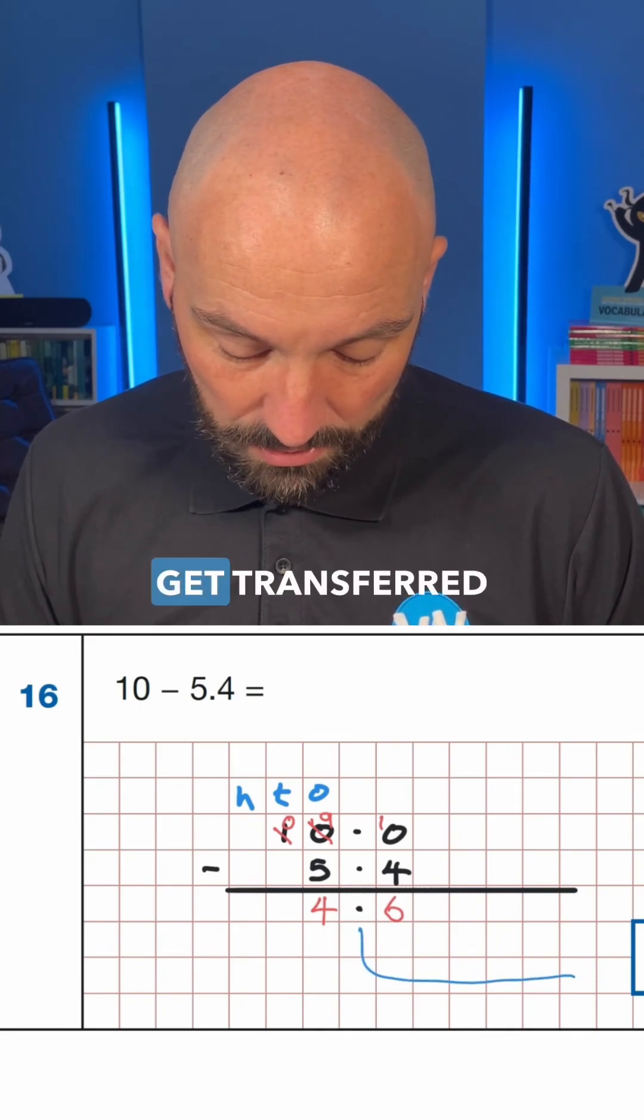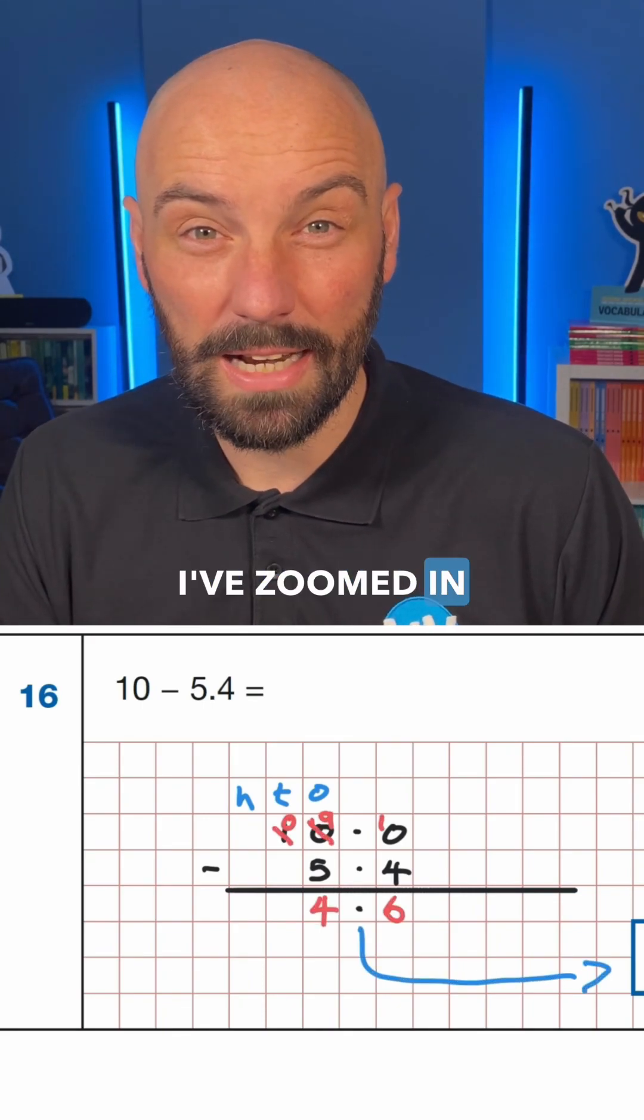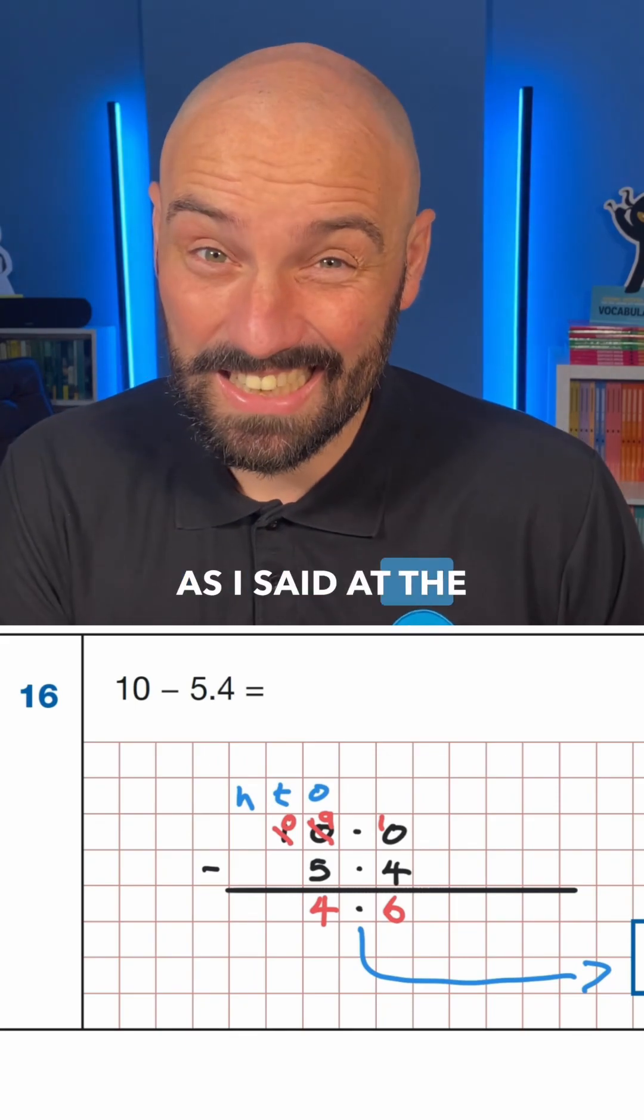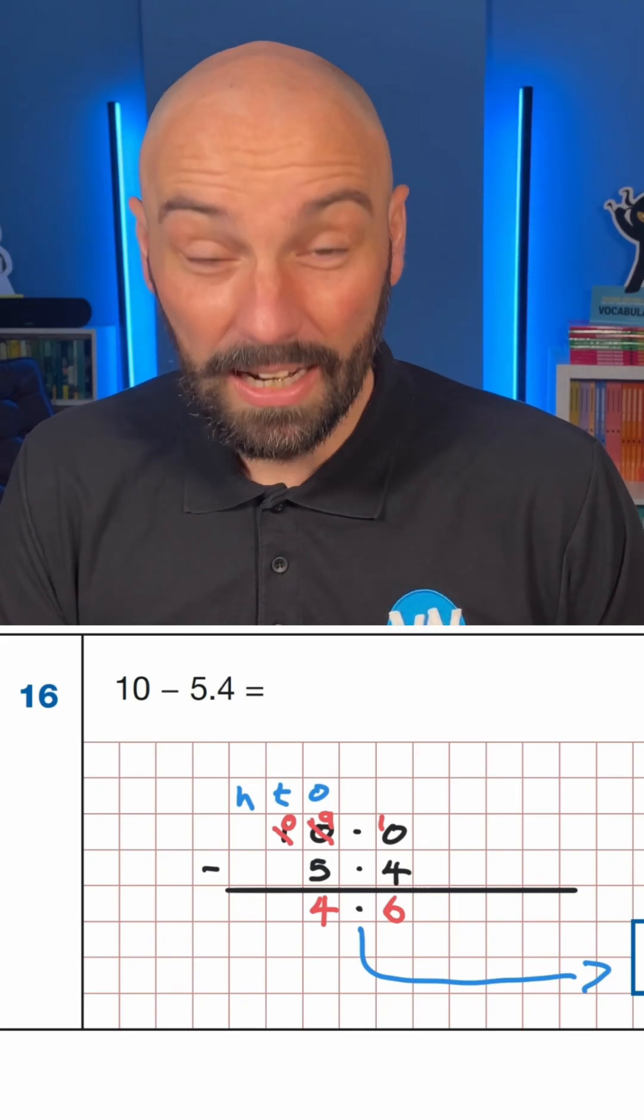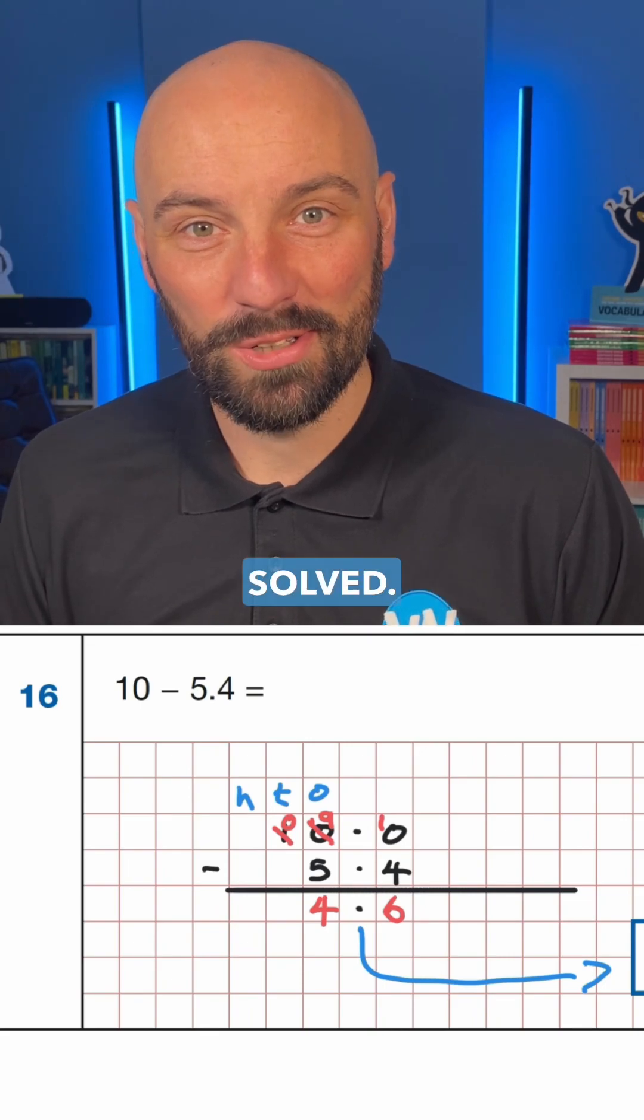So the question would obviously get transferred in the answer box. I've zoomed in a little bit here, but the answer, as I said at the start through the mental calculation, is 4.6, and that's another SATs question solved.